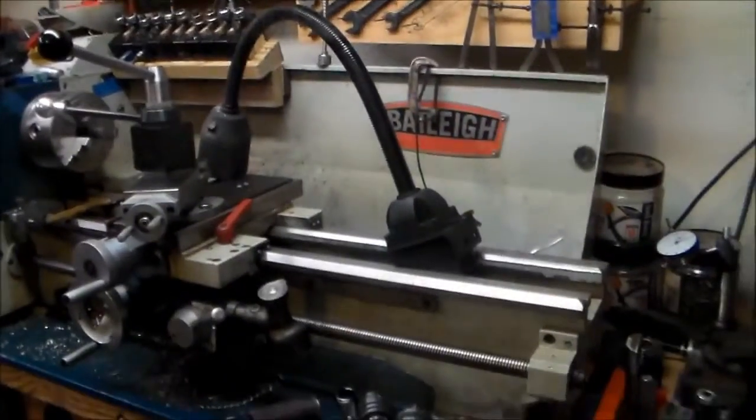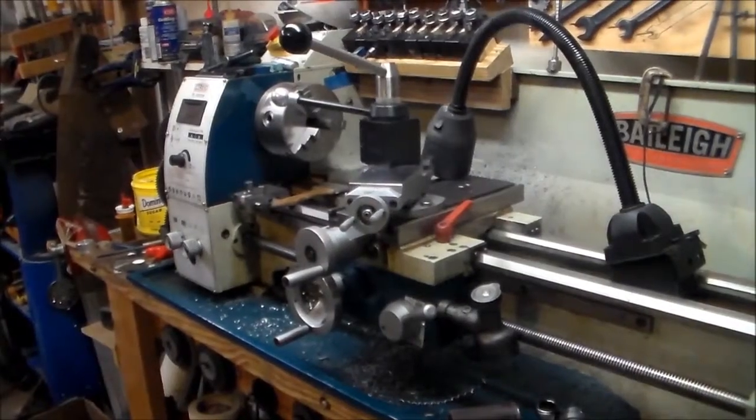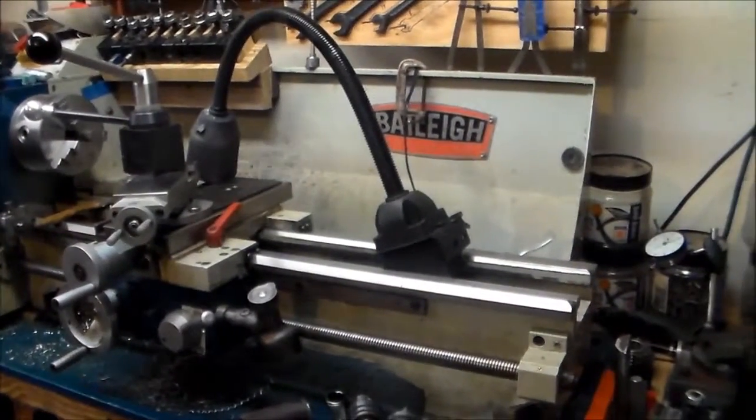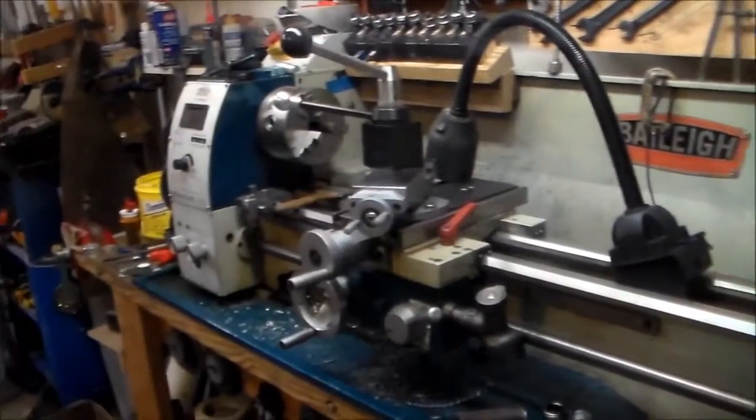I have a Chinese lathe, a 10-22. Let me turn the camera around here and take a picture of it. Yeah, there we go. It's a 10-22 lathe, variable speed, and it's missing the tailstock right now. I have it off. So that's what I'm thinking about improving.